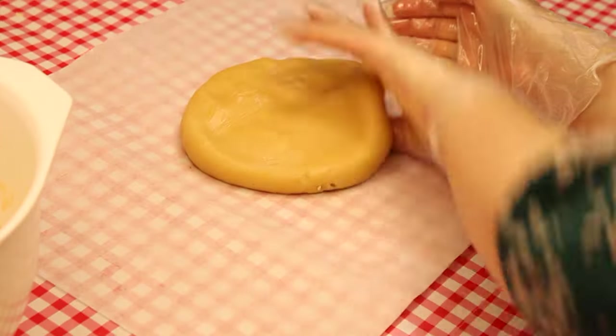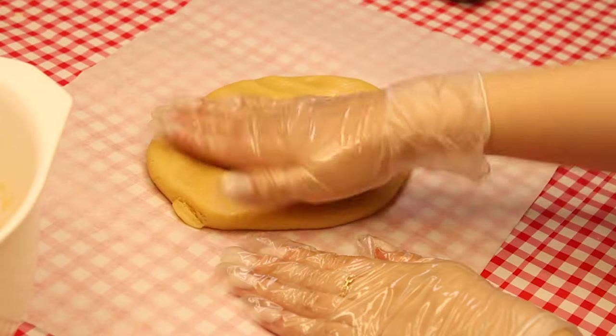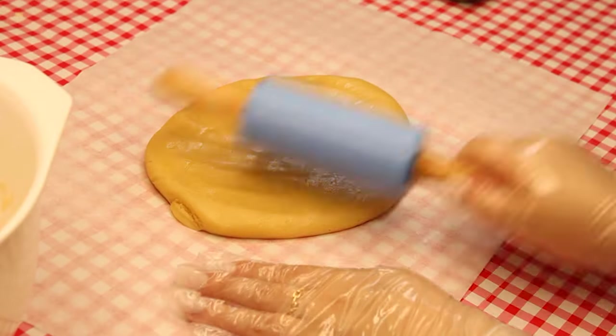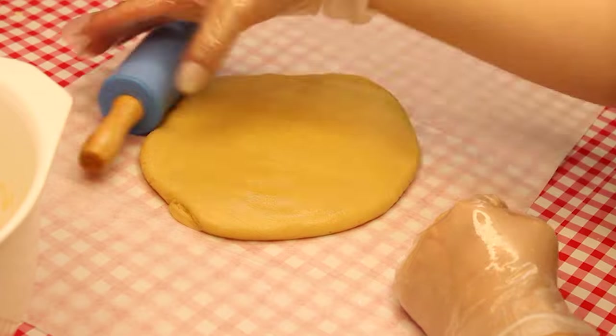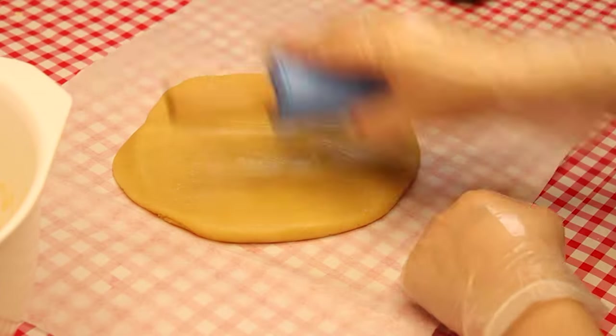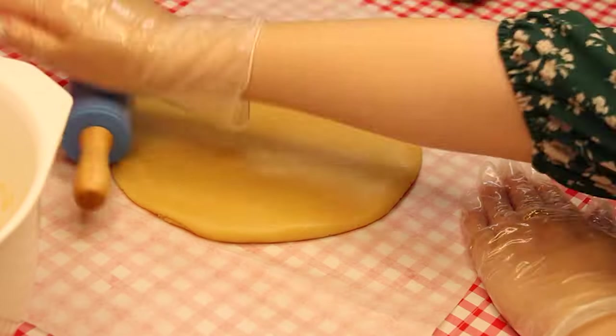Now roll out the dough using your hands to first flatten it, and then the rolling pin to get it to about a quarter of an inch in thickness. Not too thick and not too thin. Once we've got it to the right thickness, we will place the first dreidel tracer on top of the dough.